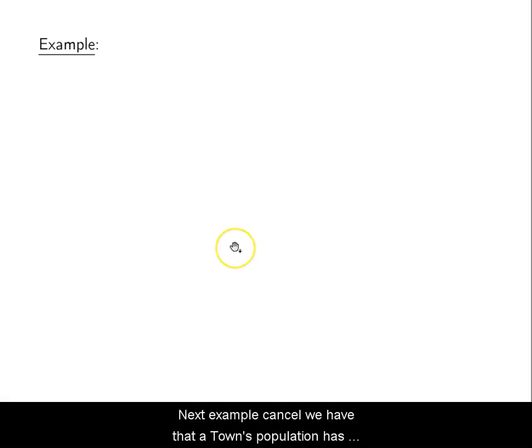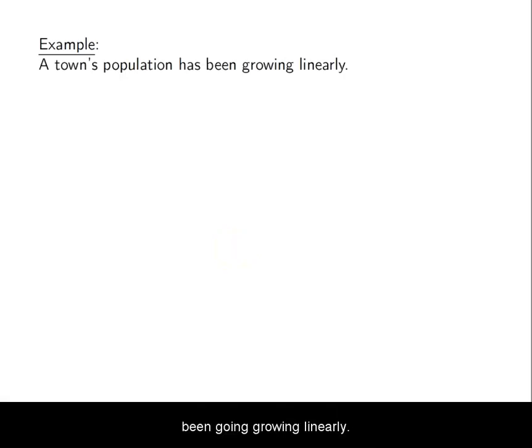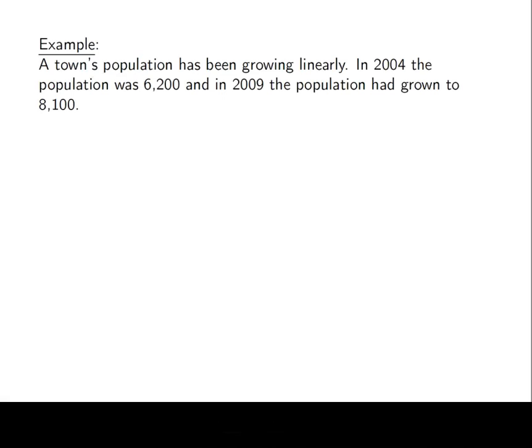Next example. We have that a town's population has been growing linearly. In 2004 the population was 6,200 and in 2009 the population had grown to 8,100.